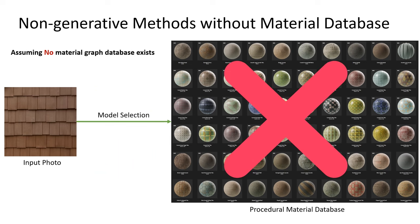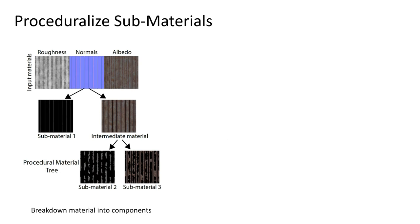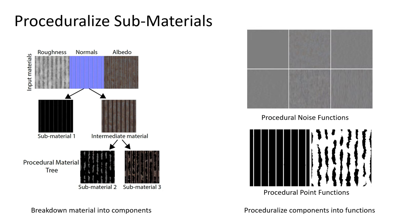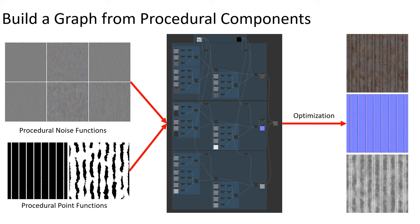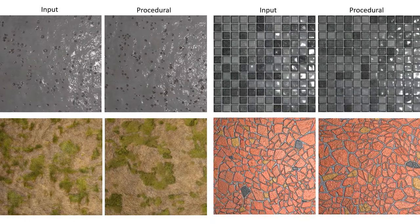However, a material graph database is not always easy to access. In another work, we do not require an existing material graph as input, rather we create a material graph directly from the material maps. The key idea is to first break down material into subcomponents, and then proceduralize the components into procedural functions, such as noise functions and point functions. We combine these procedural functions into a template graph and perform parameter optimization again to further match the material. Results show that our proceduralized material can closely match the input material maps.